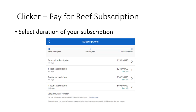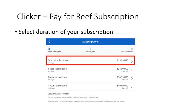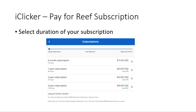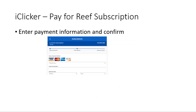Click on your desired subscription duration, which can be as short as six months or as long as four years. Enter your credit card information, then scroll to the bottom and click 'Review and Confirm.' The remaining steps should be self-explanatory.